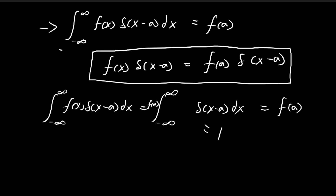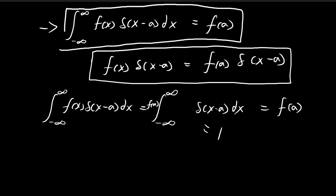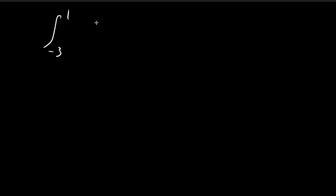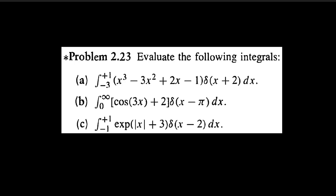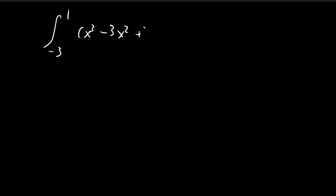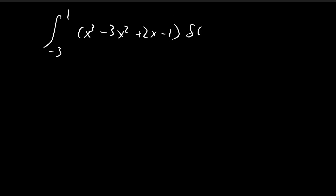That is how we prove this formula, and now we apply it. For part a, we have the integral from -3 to +1 of the polynomial x³ - 3x² + 2x - 1 times the Dirac delta function. In this case, a is equal to -2, so we just substitute -2 into this expression.